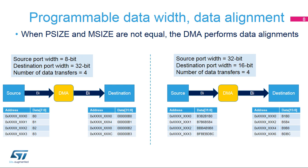When the source port is wider than the destination port, data are truncated to fit the destination port width. In the example on the right, the 32-bit words received from the source device are truncated so that only the 16-bit lower part is written to the destination address. When pointers are incremented on source and destination, the increment is equal to the port width.